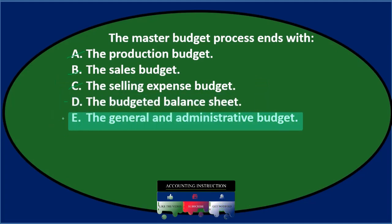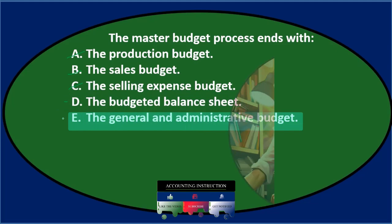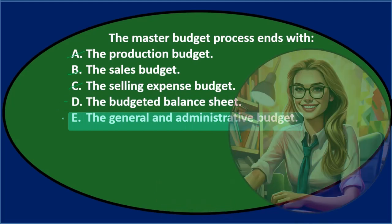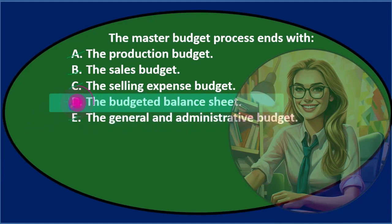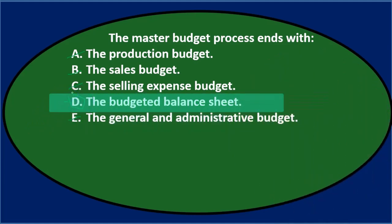E says the general and administrative budget — that doesn't sound like the finale type of thing we want to get to. Sounds kind of blah. So I'm going with D, final answer: the master budget process ends with D, the budgeted balance sheet.